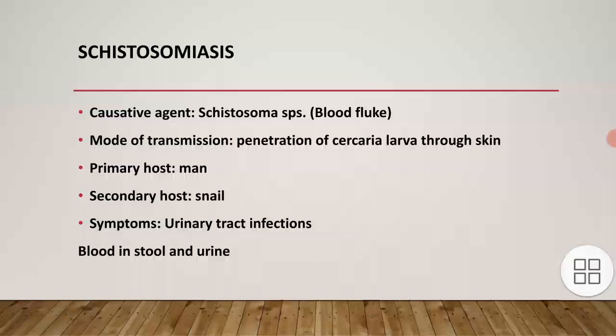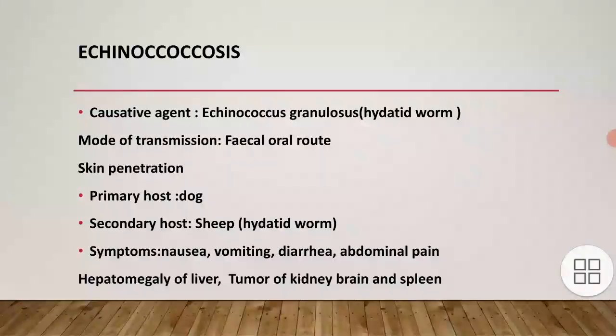Echinococcosis: the causative agent is Echinococcus granulosus, also known as hydatid worm or dog tapeworm. Mode of transmission is fecal-oral route and skin penetration by larva. Primary host is dog, where sexual phase takes place; secondary host is sheep, where hydatid worms are found. Symptoms include nausea, vomiting, diarrhea, abdominal pain, hepatomegaly, and tumors of kidney, brain, and spleen.